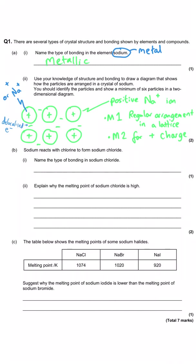In this second part of the question, we're told that sodium reacts with chlorine to form sodium chloride and we're asked to name the type of bonding in sodium chloride. The thought process is: sodium is a group one metal, chlorine becomes chloride which is a non-metal, and so metal and non-metal is ionic bonding.